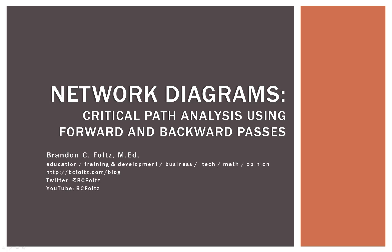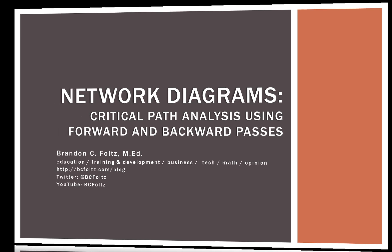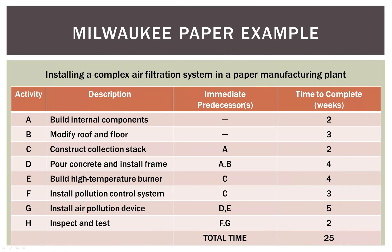So let's go ahead and dive right in. If you remember from our previous video on network diagrams, we have the Milwaukee Paper Company that is installing a complex air filtration system. We listed out all the activities required to install that system, their order, and their immediate predecessors — because certain activities can only come after previous activities — and we also added the factor of time, so each activity has an associated time frame.